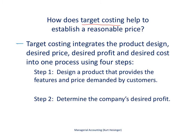The first step is to design a product that provides the features and the price demanded by customers. We're going to put together a product with features that customers want, and then establish a price that customers are willing to pay. For example, let's say we have a laser printer with all the features customers want, and we've determined that customers are willing to pay 240 dollars for it.